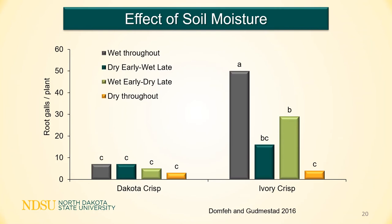These results are from that same study but show root galls per plant. We have two varieties: Dakota Crisp, which is resistant to powdery scab, and Ivory Crisp, which is susceptible. We see basically the same trends where reduction in soil moisture reduces disease severity. Dry early tends to be a little better than dry late, but when we think about when roots are formed versus when tubers are formed, that really does make sense.